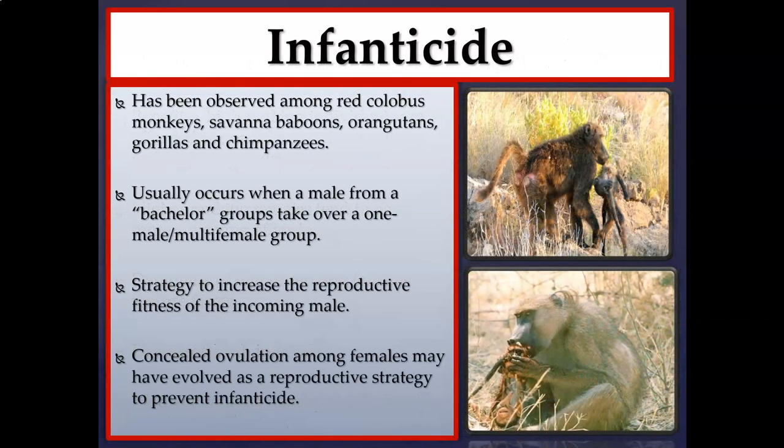Infanticide is not super common but does occur among primates, more so in certain species. It has been observed among red colobus monkeys, various savannah baboon species like hamadryas and gelada baboons, orangutans, gorillas, chimpanzees, and humans. The most common time it occurs is when a male from a bachelor group takes over a one-male multi-female group, hypothesized as a strategy to increase the reproductive fitness of that incoming male.